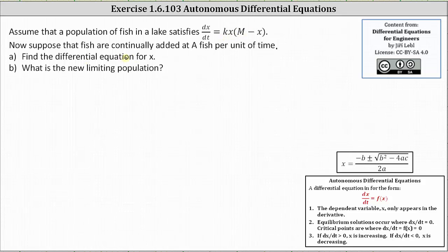Now suppose that fish are continually added at a fish per unit of time. For part a, find the differential equation for x. Well, dx/dt represents the change in the population per unit of time, and therefore, if fish are continually added at a fish per unit of time, dx/dt is now equal to kx times the quantity m minus x plus a.